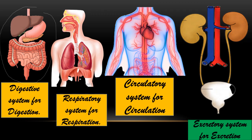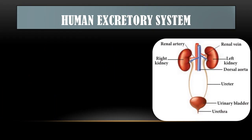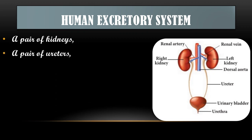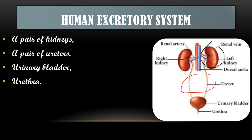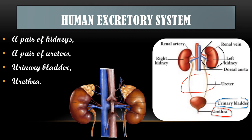You can observe a pair of kidneys, urinary bladder, urethra, artery, and vein on the screen. The human excretory system consists of a pair of kidneys, a pair of ureters, the urinary bladder, and the urethra. These organs together make up the excretory system of the human being.